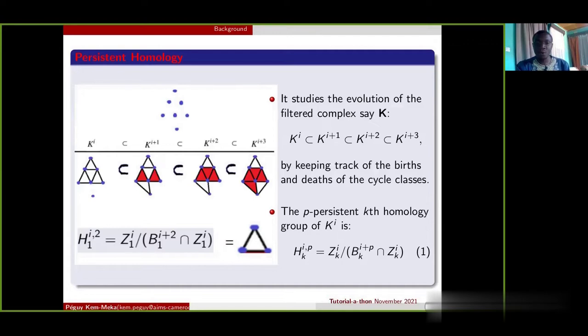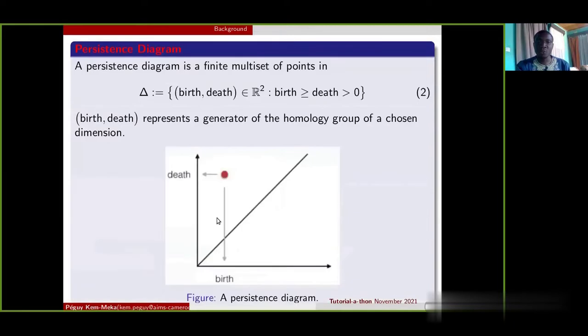So persistent homology enables us to know exactly when a cycle is created and when it dies, and this is then summarized and stored in a combinatorial way in a diagram called persistent diagram which is a finite multi-set of points in a plane above the diagonal. Here is the definition.